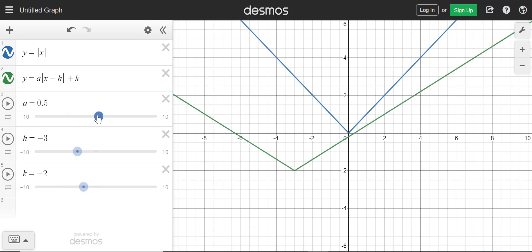The a here, you can see, is going to make it skinnier. It has a vertical stretch. If a goes above 1, it stretches more and more. And if we have something between 0 and 1, it gets wider. We have a vertical compression.